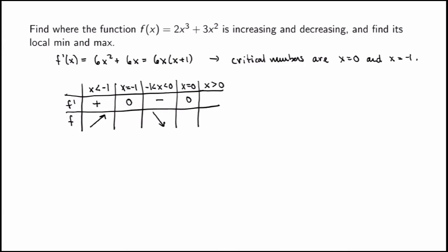For x positive, everything is positive so the derivative is positive and the function is increasing. From the table, it's easy to apply the first derivative test: at x = −1 the function goes from increasing to decreasing, so that's a local max; at x = 0 it goes from decreasing to increasing, so that's a local min.